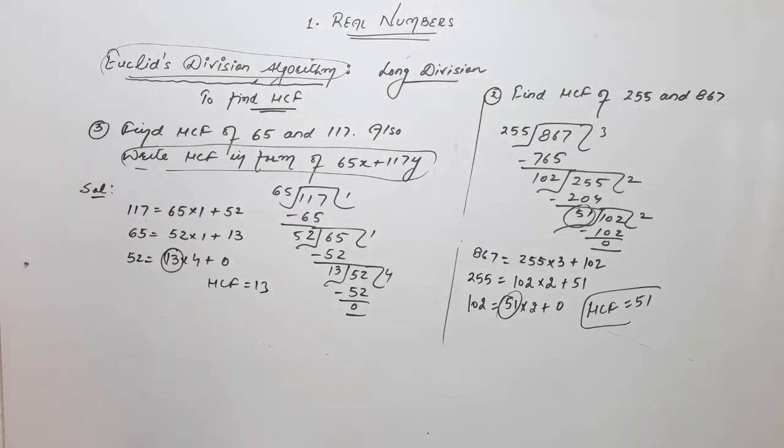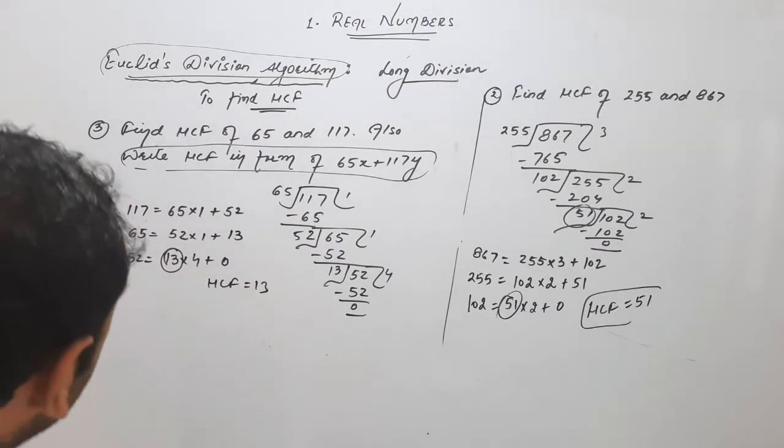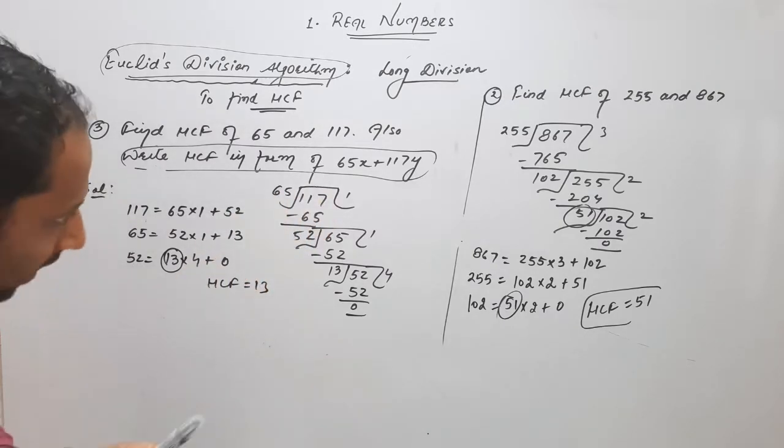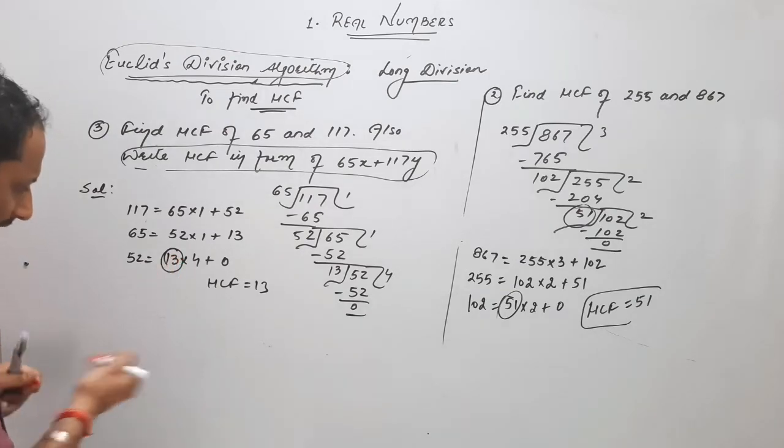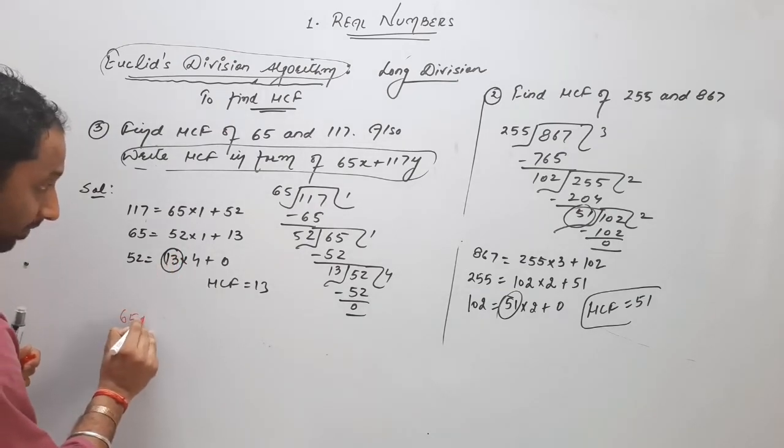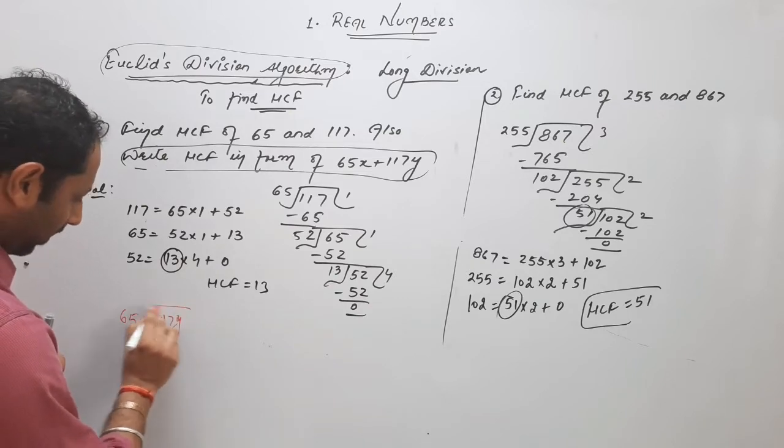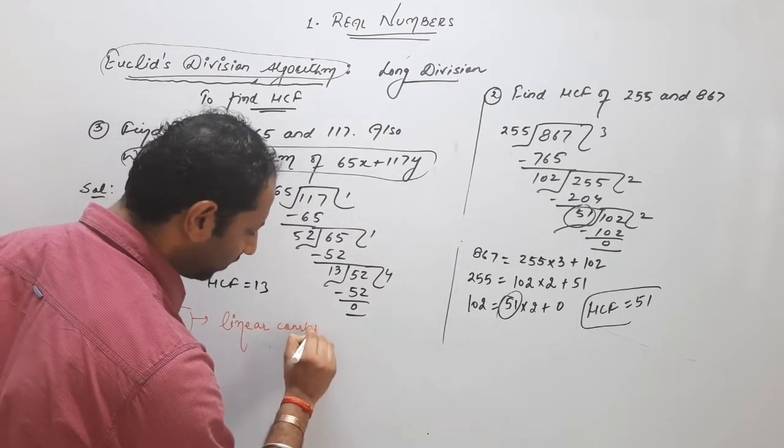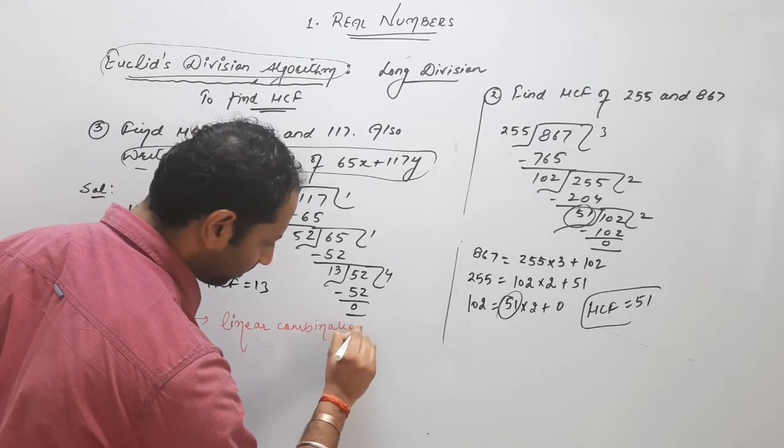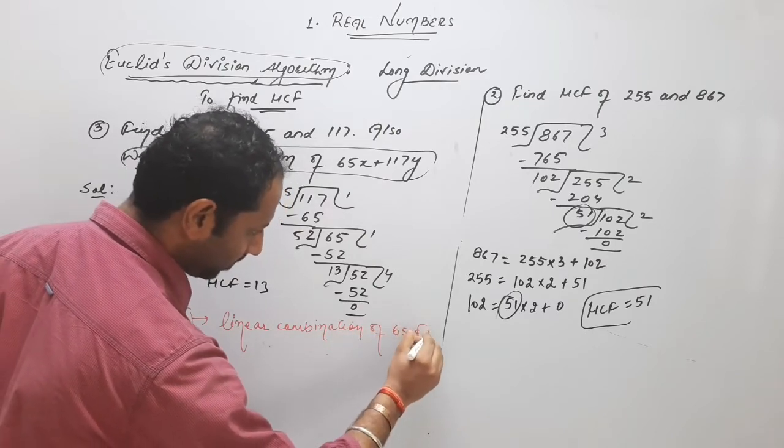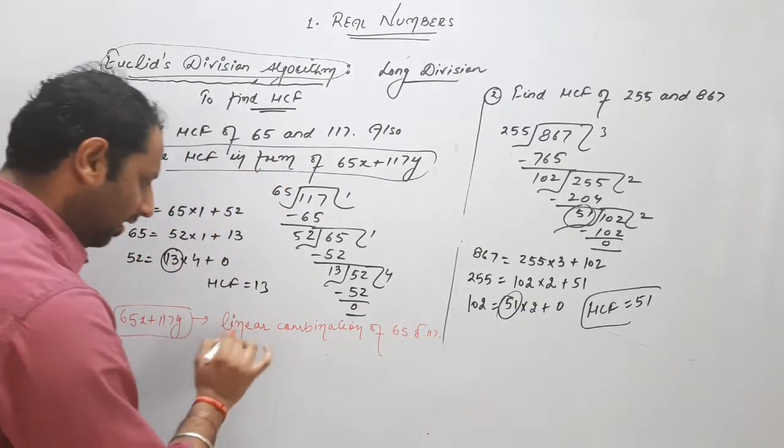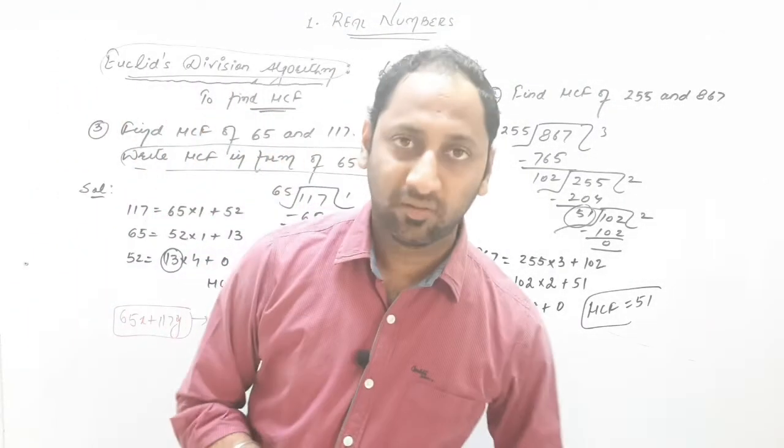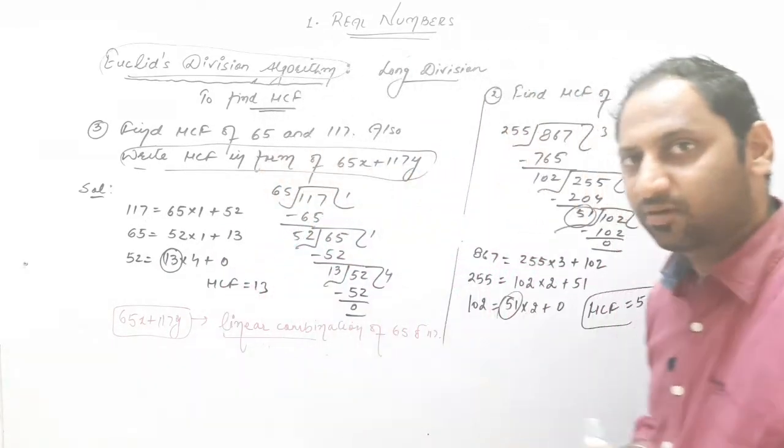But now, thing is, we have to express, we have to write HCF in the form of this. What is that? Guys, this is called, what is this concept? It is called linear combination of given numbers. This is called linear combination derived from linear pairs. In ninth class, we have done linear equations. You know it, no?